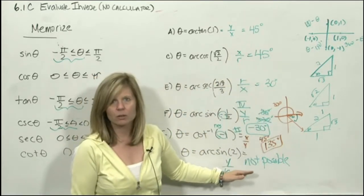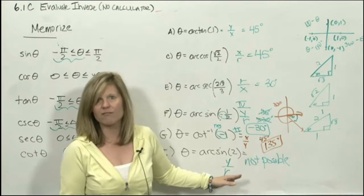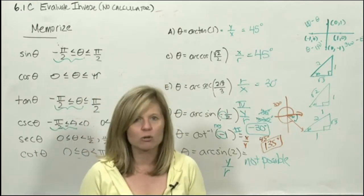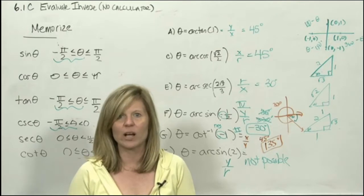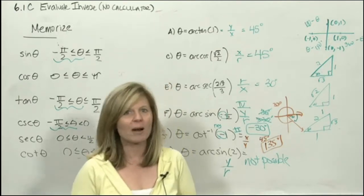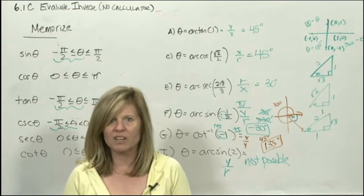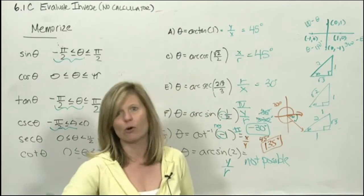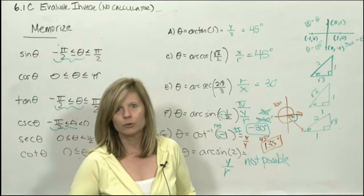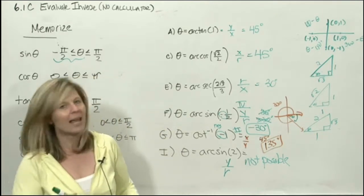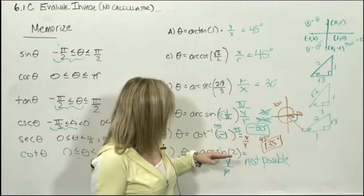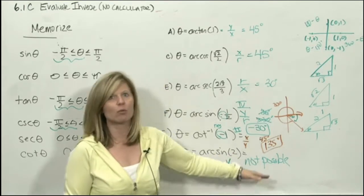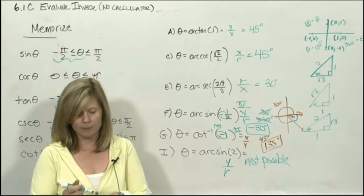Don't use the word 'undefined' — that means you divided by zero and we did no dividing by zero. Don't say 'no solution' — that's for solving equations. Don't say 'imaginary' — that's for square roots of negative numbers. Use vocabulary correctly; those words are specific to specific situations. The correct response here is: 'not possible' or 'no angle exists' — the sine value can't be bigger than 1.